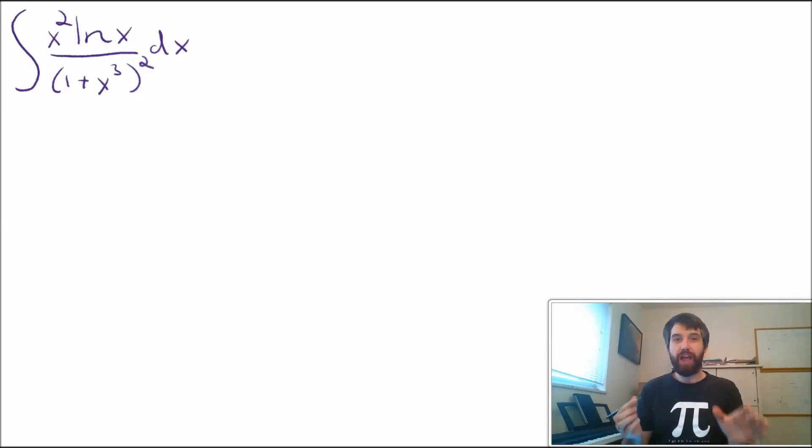But the one thing I can look at, the one thing that I can sort of sink my teeth into, is that I note that I have this x cubed down here on the bottom, and I have this x squared up here on the top. I have this relationship of a polynomial of degree n, and a polynomial of degree n minus 1.